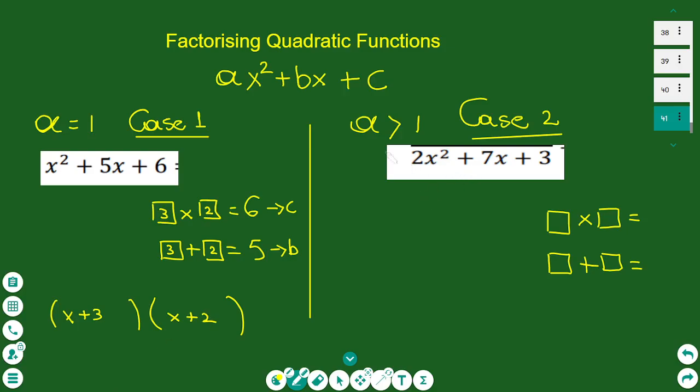The second case is when I have a more than 1, for example 2x² + 7x + 3. Again we are looking to find two numbers. When they multiply, they give you a times c, which is 2 times 3 equals 6, and they add to give you 7.